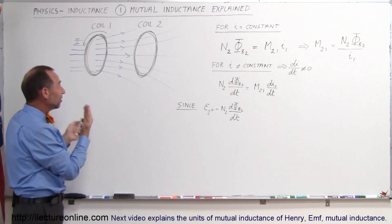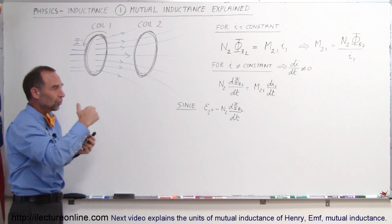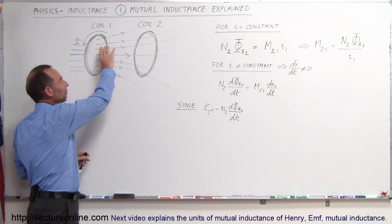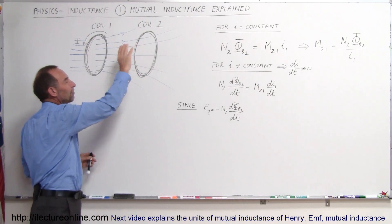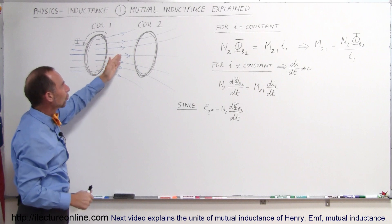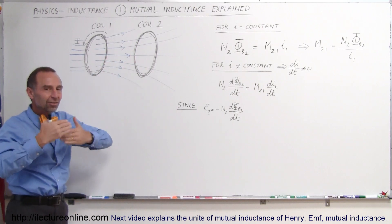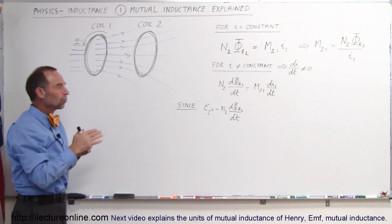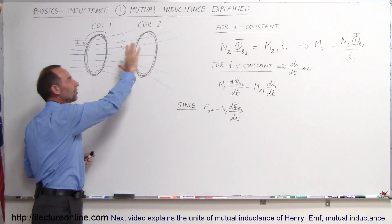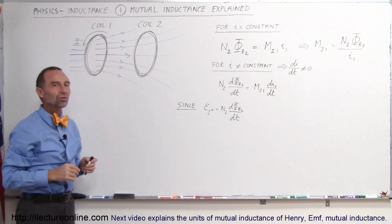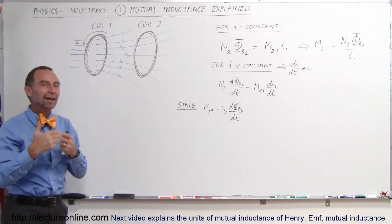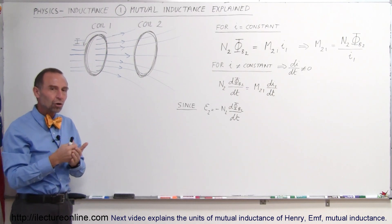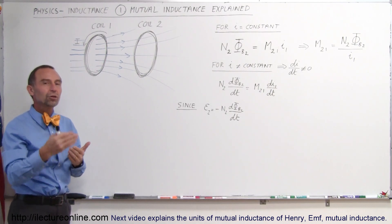These field lines represent a steady-state condition — the current is not changing. The field exists, and some of the flux, magnetic flux, goes through the second coil. Because of that interaction, there is some inductance on the second coil caused by the presence of the first coil and its current. That effect is called mutual inductance.